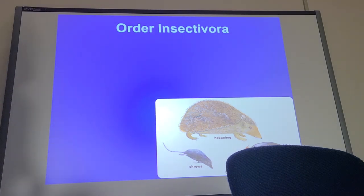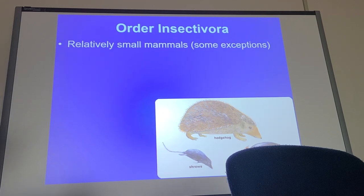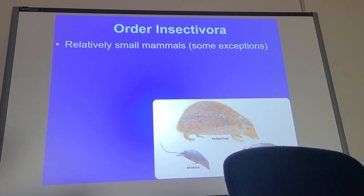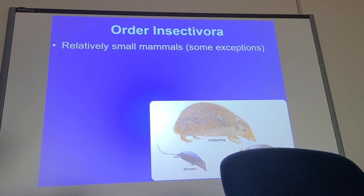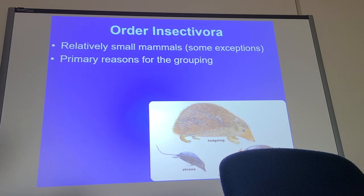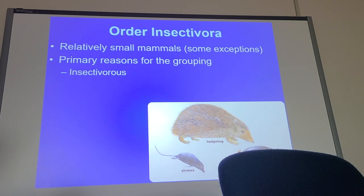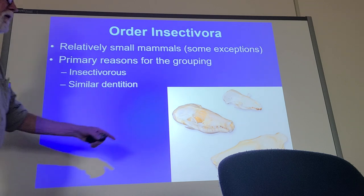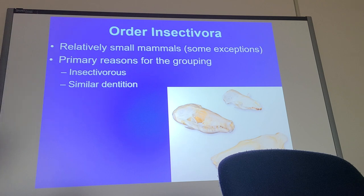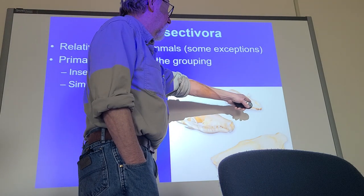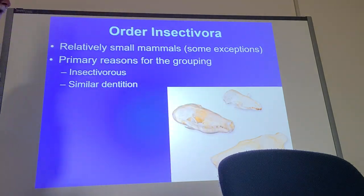Order Insectivora included hedgehogs, moles, and shrews. Most of them are little tiny animals. They were grouped together because they were all insectivores — hence the name — and they also had very similar teeth, like the ones we saw in the lab with the Talpidae (moles) and Soricidae (shrews). A mole, a shrew, and a tenrec all look somewhat similar in terms of their teeth.